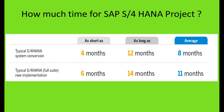How much time will it take to implement an SAP S4 HANA project? There are two approaches: migration from SAP ECC to SAP S4 HANA (system conversion), which takes a minimum of four months, a maximum of twelve months, with an average of eight months. A full new implementation takes a minimum of six months, a maximum of fourteen months, with an average of eleven months. New implementation is available for anyone coming to SAP for the first time as well.